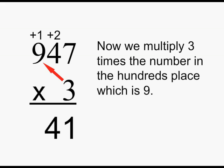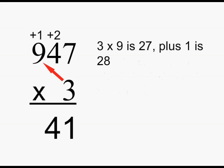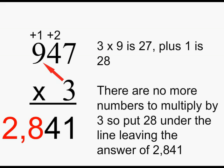Now we multiply 3 times the number in the hundreds place, which is 9. 3 times 9 is 27, plus 1 is 28. There are no more numbers to multiply by 3, so put 28 under the line, leaving the answer of 2,841.